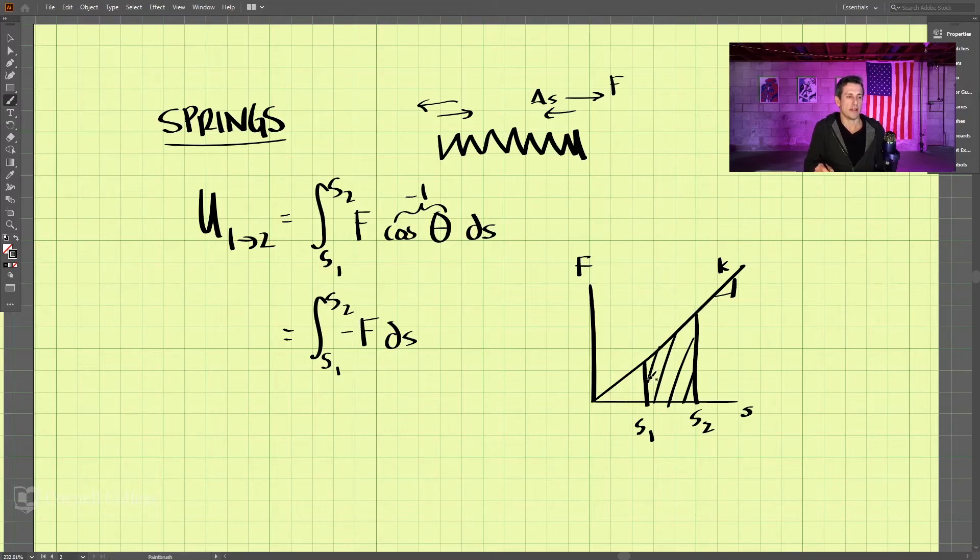So what is this area here? Well, this is a trapezoid. And if you remember the area of a trapezoid, we have h1, this is the height 1, and height 2 of a trapezoid.